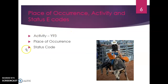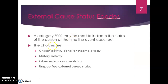We have place of occurrence, activity, and status external cause codes. Activity codes come from Y93, assigned to describe the activity of the patient at the time of injury, used at the initial encounter. We do not assign Y93.9 unspecified activity if the activity is not stated. Place of occurrence is where they were — at a movie house, at their home, in their kitchen. Status is whether the patient was at a military event, whether they were non-military, a student, or a volunteer. We do not assign an unspecified status code if status is not stated. There are only four choices for external cause status codes.